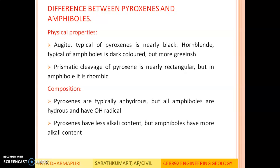In composition: pyroxene are typically anhydrous, meaning they do not contain the OH radical, but all amphiboles are hydrous and have the OH radical. Based on the OH radical content, pyroxene have less alkali content, but amphiboles have more — since they have hydroxyl ions, the alkali content of amphiboles is much higher than that of pyroxene. So in physical properties the color and cleavage structure differ, while in composition the main difference is the presence of hydroxyl OH radical ions in amphiboles but not in pyroxene.